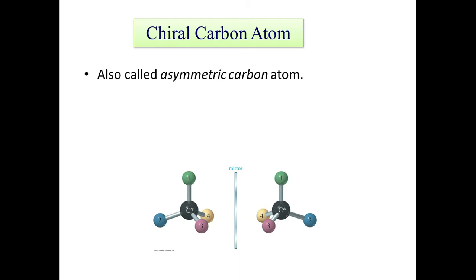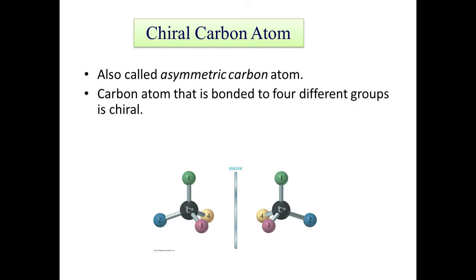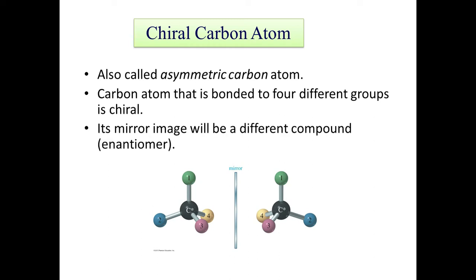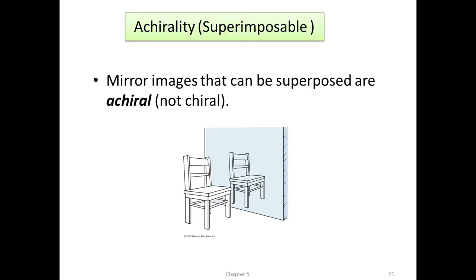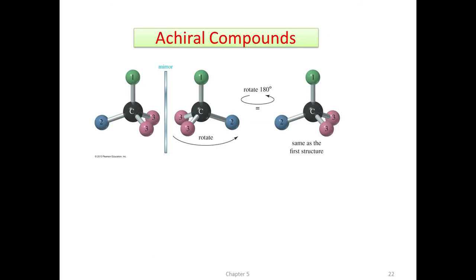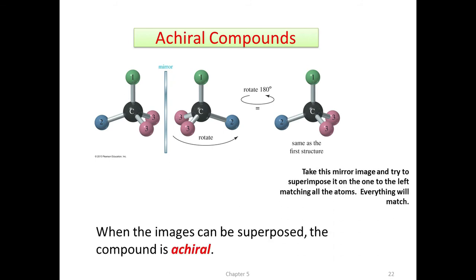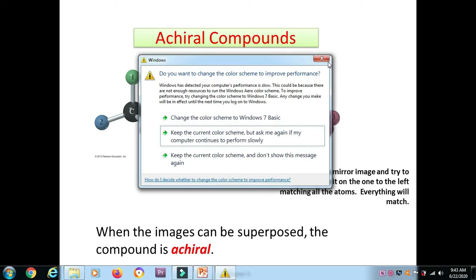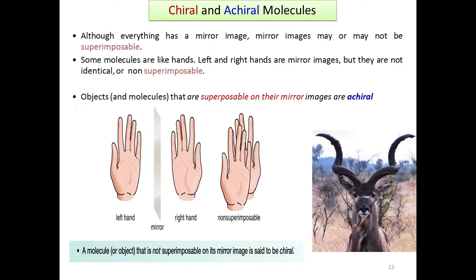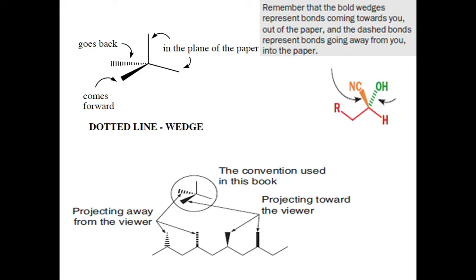A carbon atom with four different groups arranged around it is called an asymmetric center or chiral carbon. Its mirror image will be a different compound — an enantiomer. An achiral molecule is one whose mirror image is superimposable on itself — it has two similar groups and two different groups. Examples of chirality: hands, gloves, and socks are non-superimposable mirror images, illustrating chiral and achiral concepts.